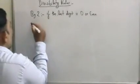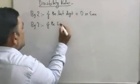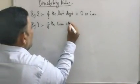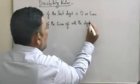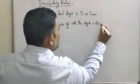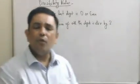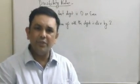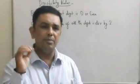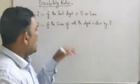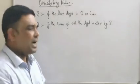When is a number divisible by three? A number is divisible by three if the sum of all the digits is divisible by three. If the sum of all the digits is divisible by three, then the number is also going to be divisible by three. Now let me share with you something interesting — an important aspect.